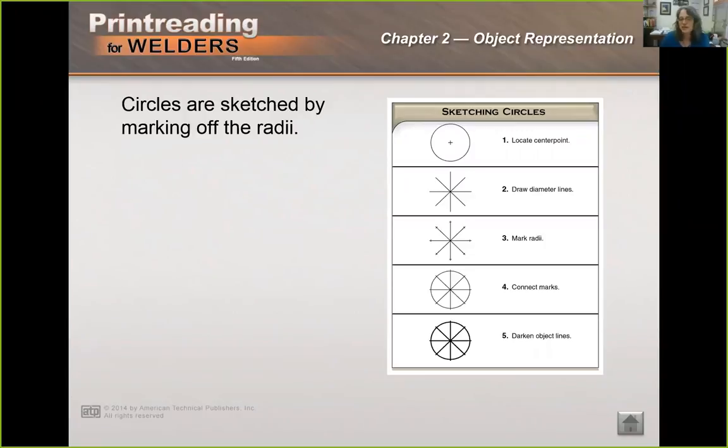Circles are sketched by marking off radii. So what we're going to do is very lightly locate the center point of our circle and then we're going to lightly draw in a set of diameter lines and lightly mark off the radii. And then we connect those marks because the human eye can draw a little arc consistently, but we have a hard time drawing a whole circle. And then you darken the lines you're going to keep, the object lines.